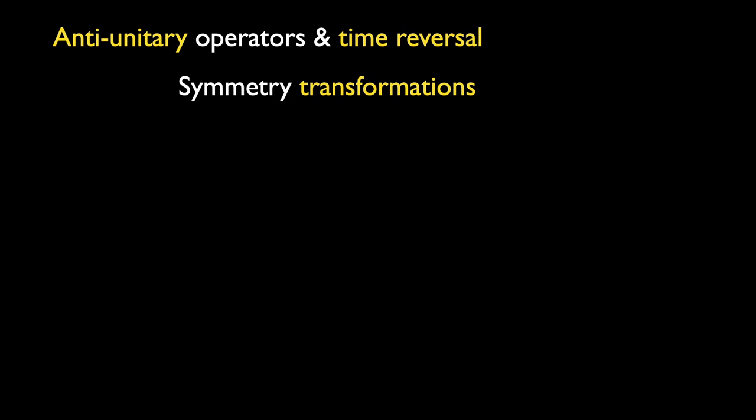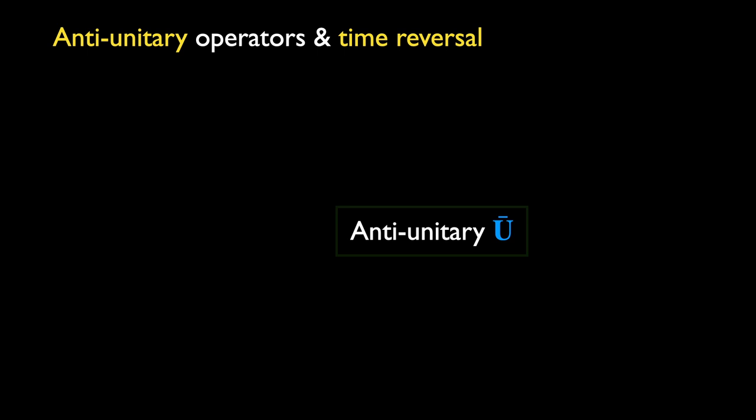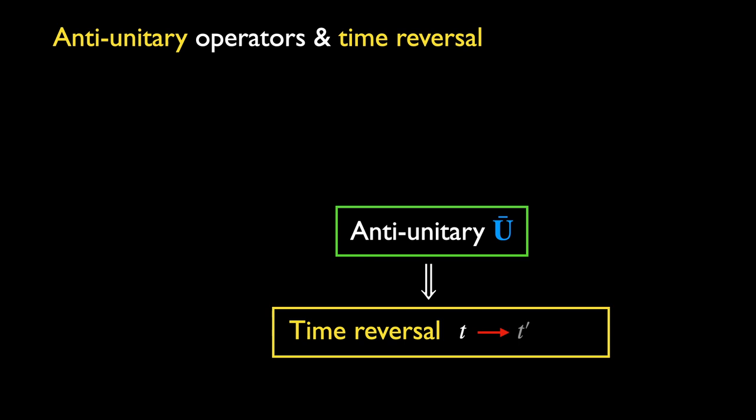We now explain the connection between symmetries represented by anti-unitary operators and time reversal. Recall that we have alluded to this in an earlier discussion about symmetry operators in lecture 3, and listed the unitary and anti-unitary operators as the two possible ways in which symmetries are implemented. This is stated in Wigner's theorem on quantum symmetries. Here we will prove that an anti-unitary symmetry always leads to time reversal as one of the consequences.